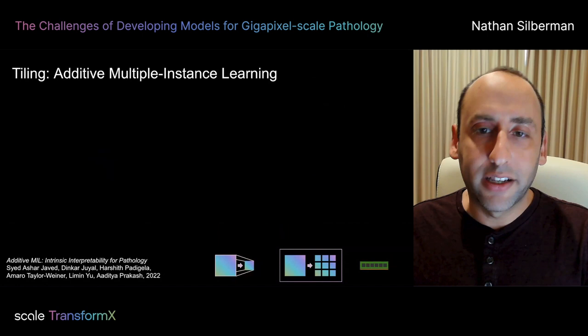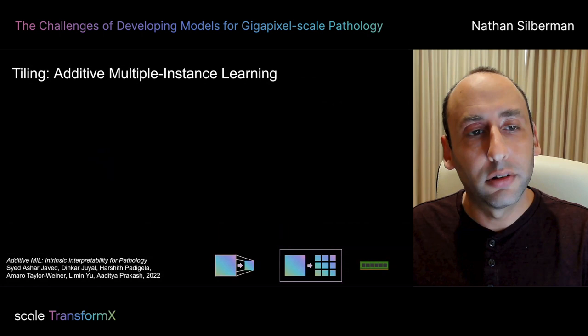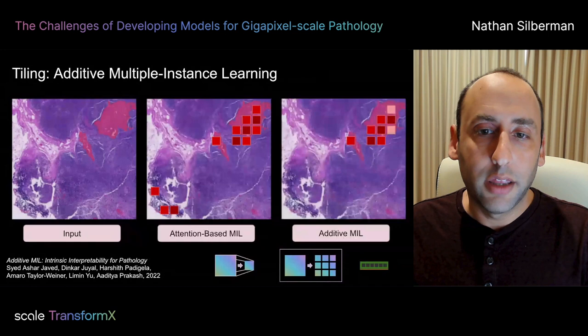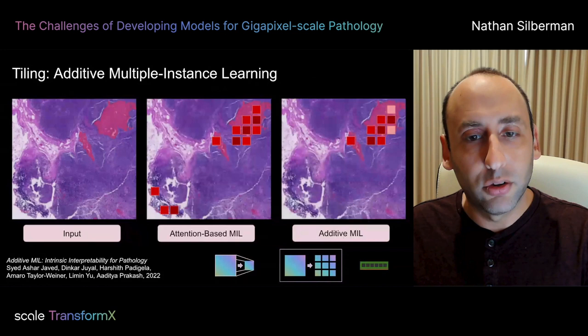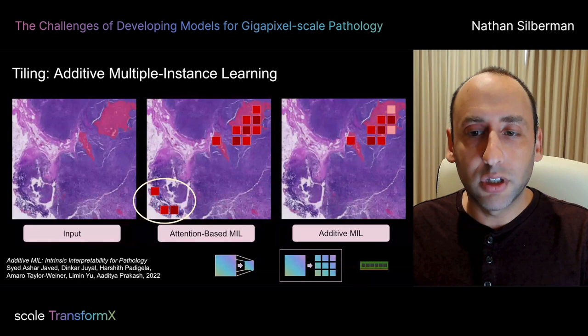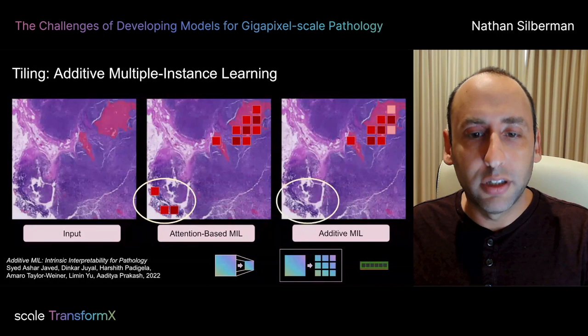Because additive MIL explicitly models excitatory and inhibitory weights, it's less likely to produce false positive mistakes. Consider this pathology image: here is a result from an attention-based MIL model, and here is a result from an additive-based MIL model. The intensity of each red tile represents the magnitude of the weights. In the attention-based model, it attends to a part of the image that happens to be non-cancerous — it ultimately does get the slide-level prediction correct, but in terms of interpretation, it's very misleading. In contrast, the additive MIL model doesn't make this mistake, as its per-class weights are trained to inhibit attention to this area, and the interpretation is totally consistent with the slide-level prediction.